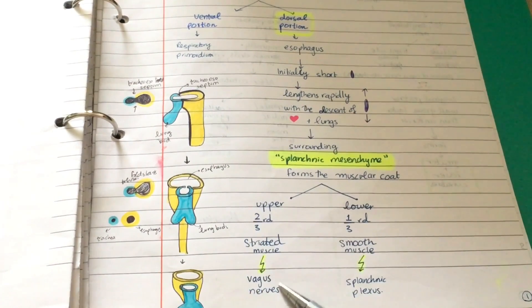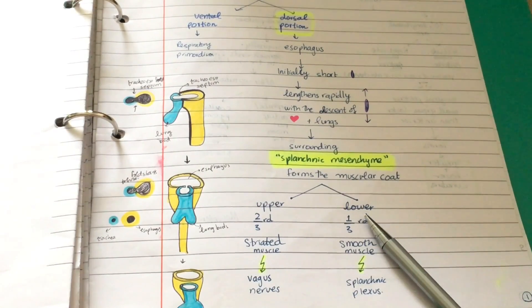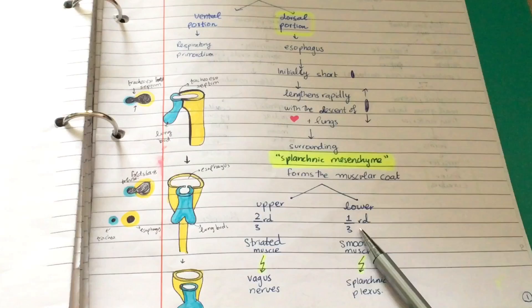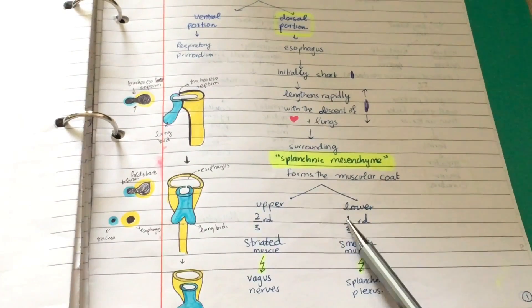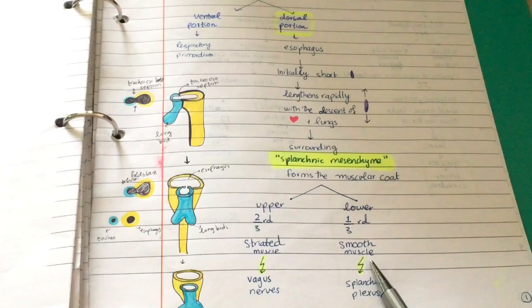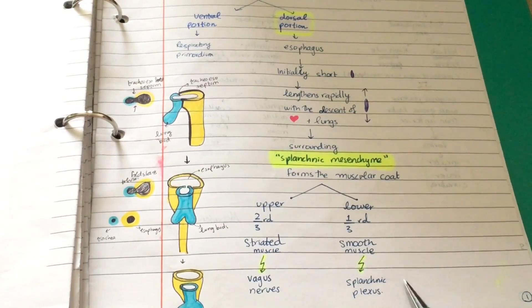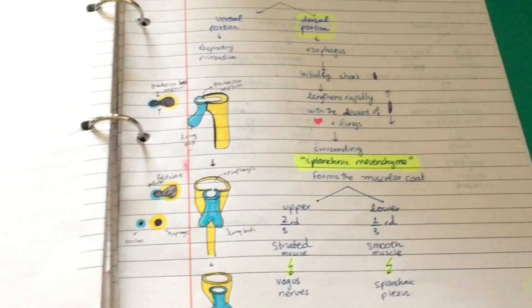The upper two-thirds are formed by striated muscle, which is supplied by the vagus nerves. The lower one-third is formed by smooth muscle, which is supplied by the splanchnic mesenchyme.